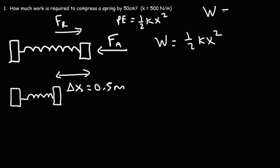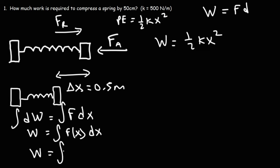So starting with this equation, we have dw is equal to f dx, where the displacement is basically x because we're moving in the x direction. If we integrate both sides of this function, on the left we'll get the work, which is the integral of the force function times dx. Now the force function, we know it's f is equal to kx, so f is just kx.